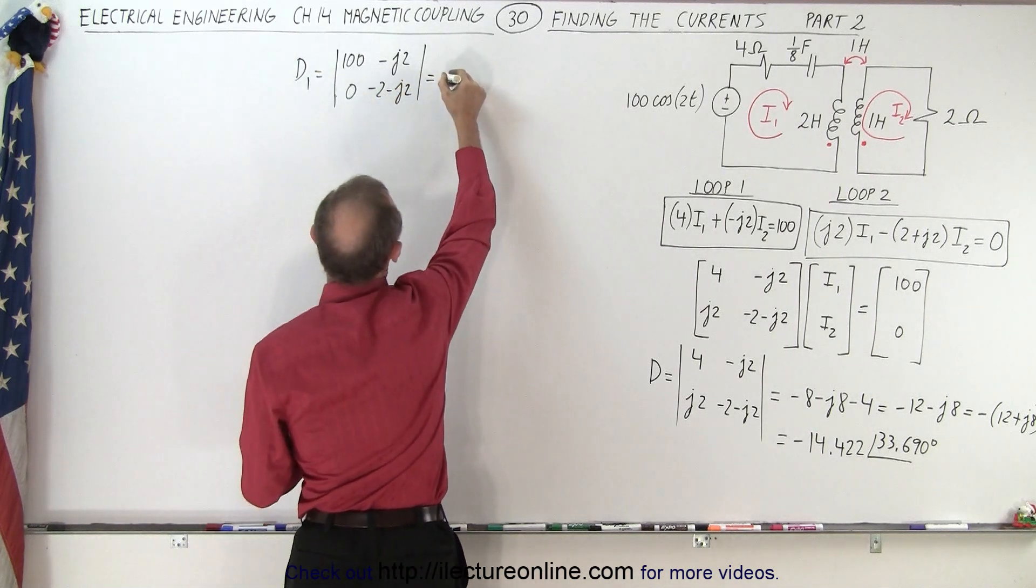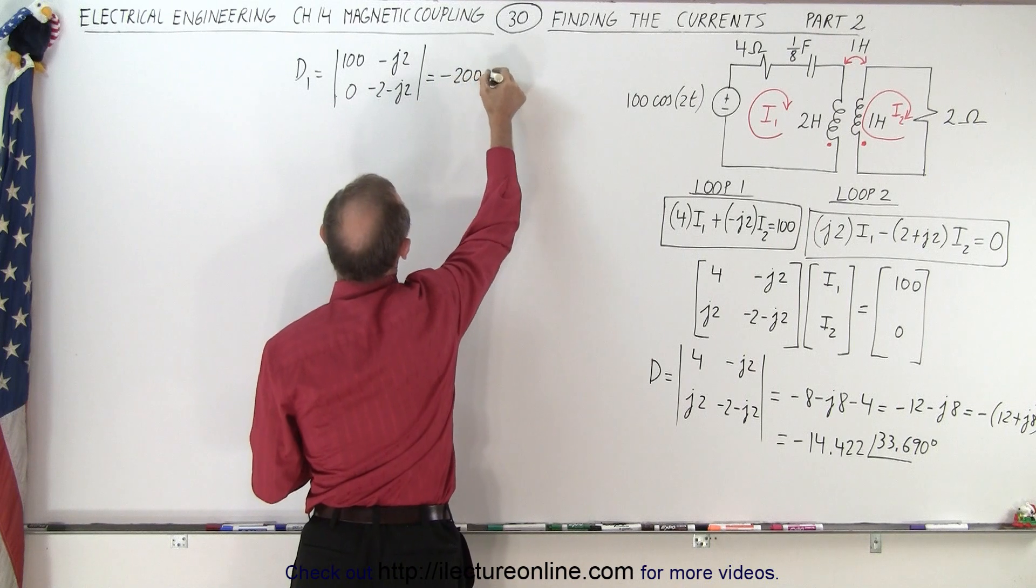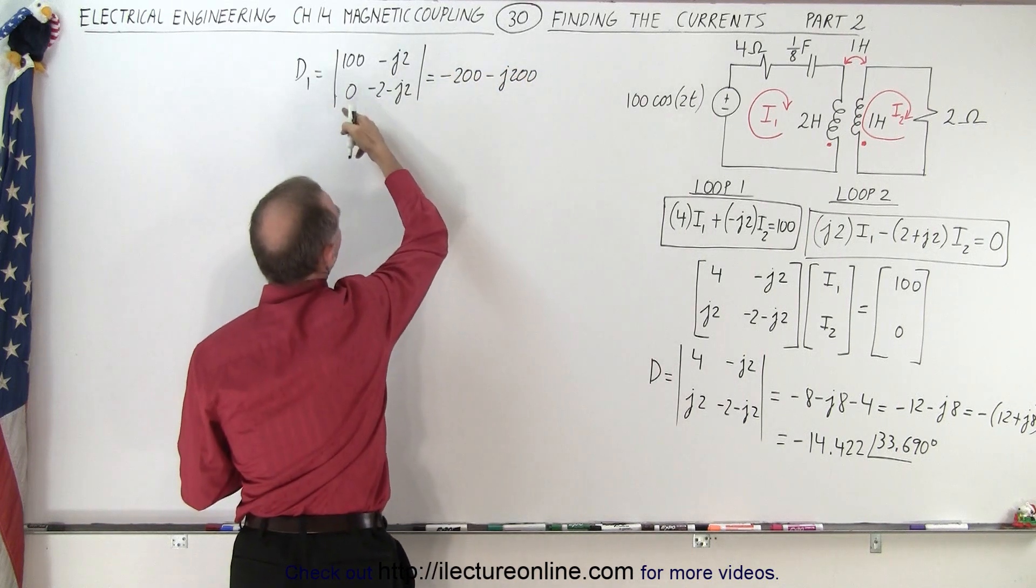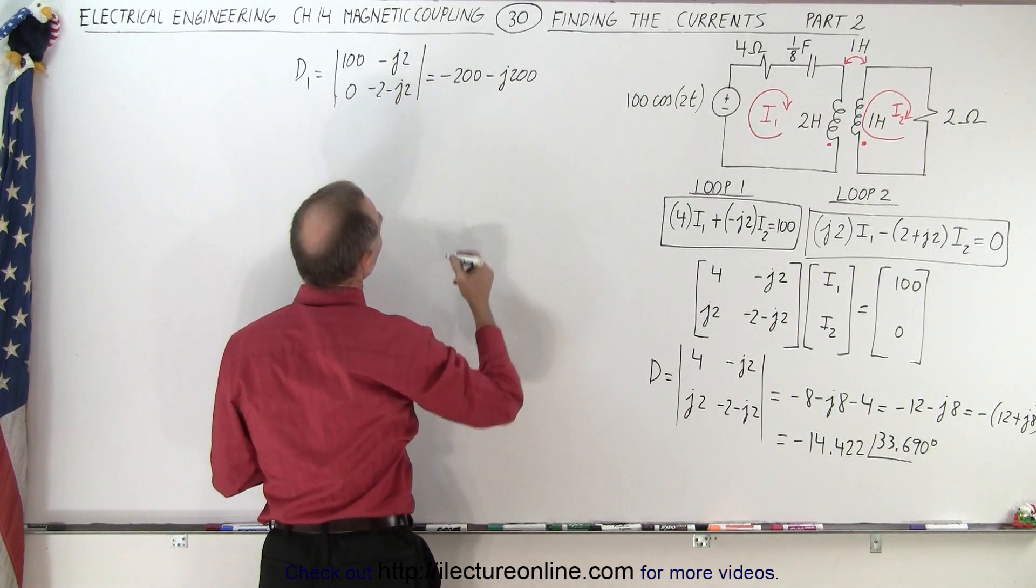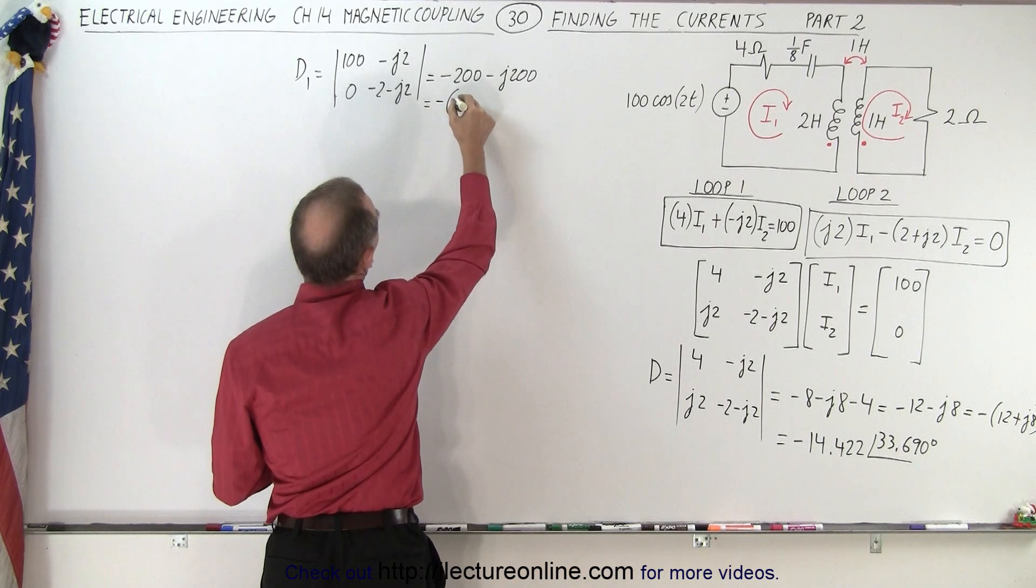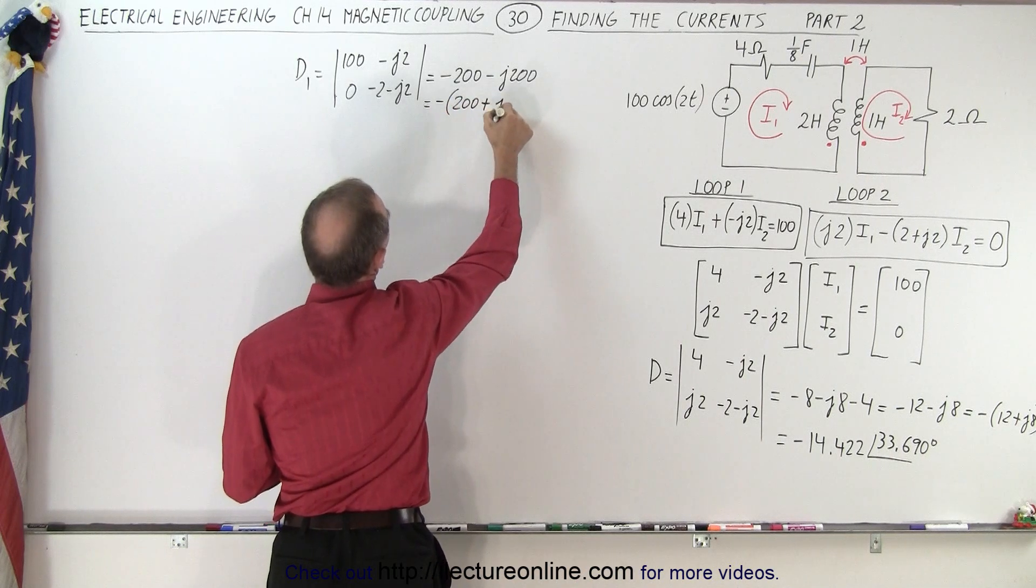When we multiply, we get minus 200 minus J200. When we cross multiply that, we get 0. So that's what we get. We can pull out a 200, so this is equal to a negative sign. We have 200 plus J200.